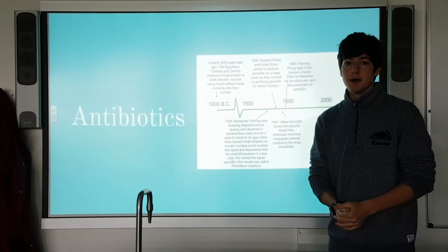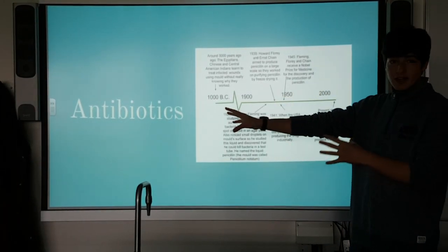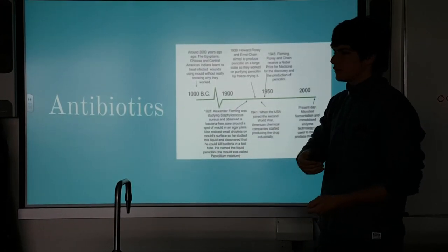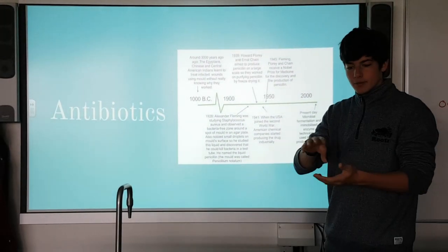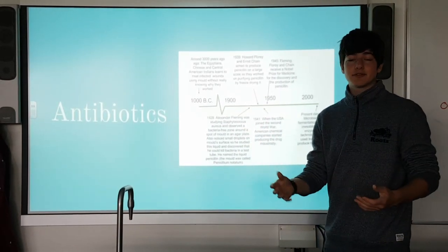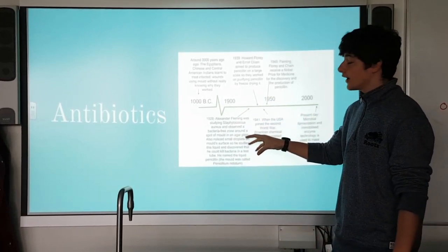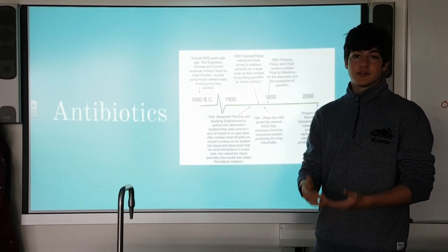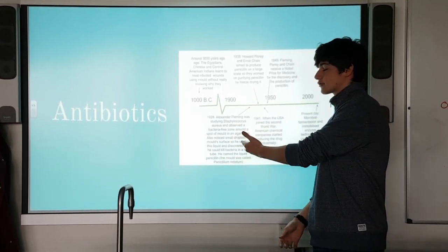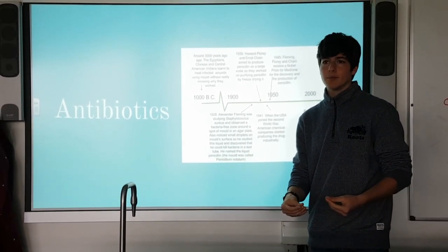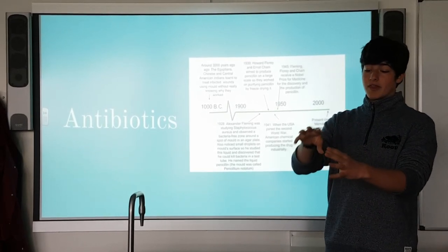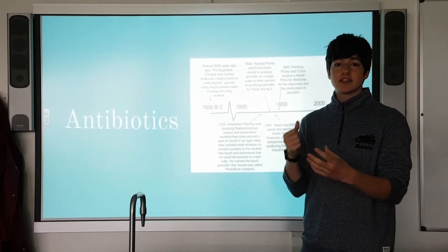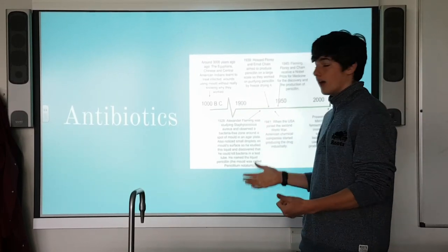Now let's look at the second essential element: antibiotics. In this timeline, you'll see how it developed over time. It started in 1000 BC where ancient peoples were using mold — and they didn't realize why — but it was curing infection. Then in 1928, Alexander Fleming discovered penicillin. It was developed during World War II and is now produced by microbial fermentation and immobilized enzyme technology. Other antibiotics, not naturally produced by mold, have been produced by site-directed mutagenesis — basically where they take a sample of bacteria, make changes to it, see which changes weaken the bacteria, and then try to synthesize molecules which make those changes.